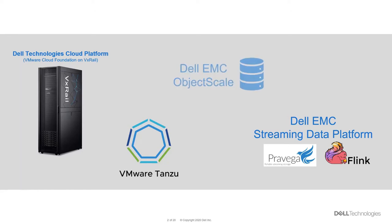Dell EMC Object Scale is a re-engineered object storage platform which takes advantage of Kubernetes' native automation for deployment, scaling, and management capabilities. With rich S3 compatibility and self-service APIs, developers can quickly spin up object storage containers to fuel everything from big data and analytics applications to ephemeral dev test sandboxes. In this case, we'll be using it as the long-term storage for our streaming application.